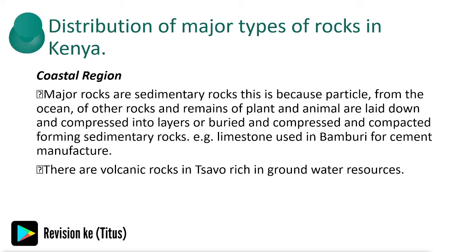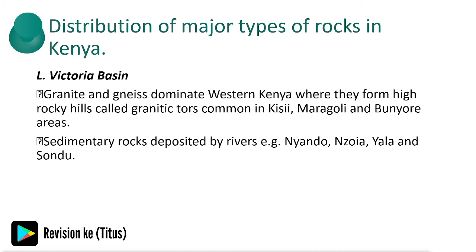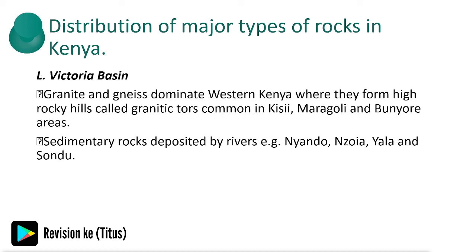The northern and northeastern region is dominated by sedimentary sand, with volcanic rocks at Mount Marsabit. The Rift Valley and Kenya Highlands are dominated by volcanic rocks — this is expected given the volcanic mountains in those areas. The Lake Victoria Basin in Western Kenya is dominated by granite and gneiss, forming granitic towers common in the Kisii region. Sedimentary rocks are also deposited by rivers Nyando, Nzoia, Yala, and Sondu.